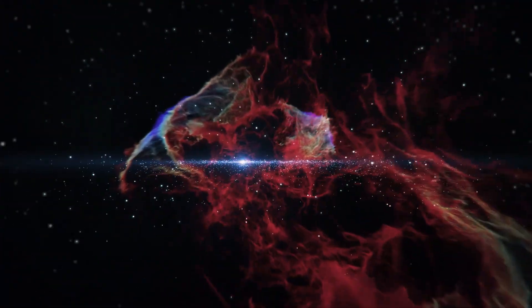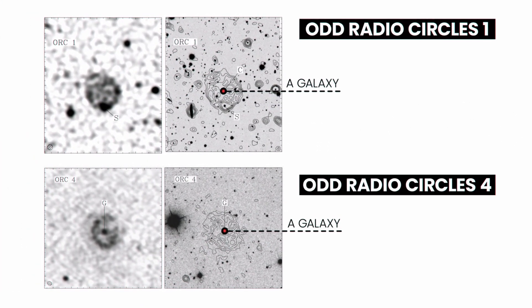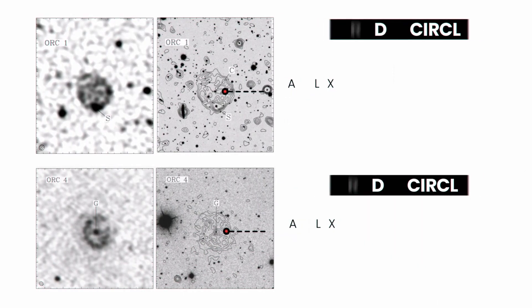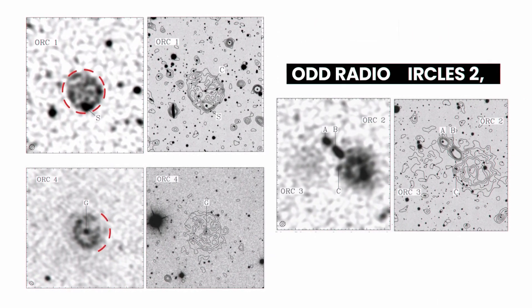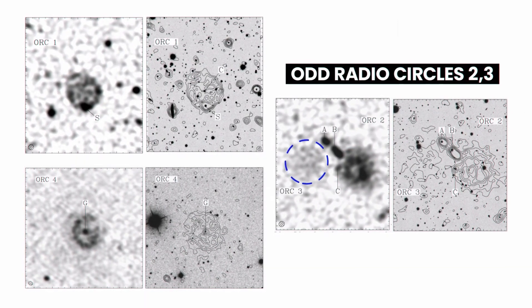But despite their similarities, they differ enough to confuse astronomers even more. Two of them have a galaxy near the center of the radio emissions in the visible spectrum, while the other two don't. Also, three of them consist of a partly-filled ring, while ORC 3 seems to be a uniform disc.